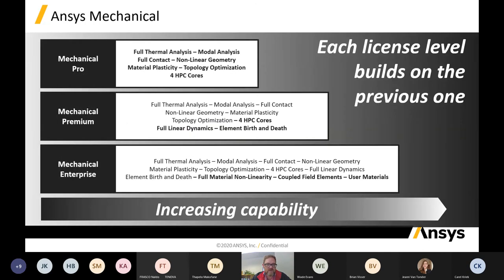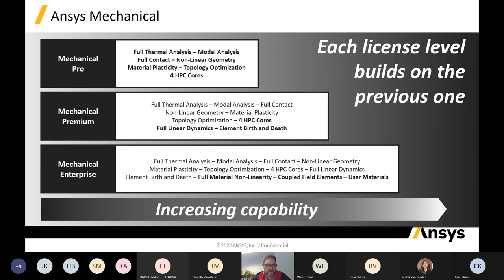A quick overview on the three levels. Mechanical Pro includes all static structural functionality, full thermal analysis, full modal analysis, full contact, non-linear geometry, material plasticity, and topology optimization. All these licenses run on four HPC cores. Mechanical Premium adds non-linear geometry, material plasticity, full linear dynamics, and element birth and death. Mechanical Enterprise adds full material non-linearity, coupled field elements, user materials, and all the other explicit tools.